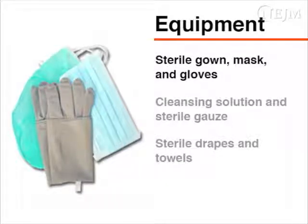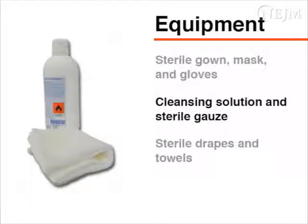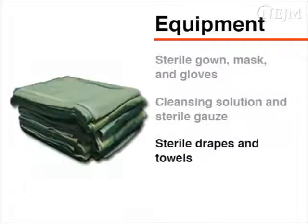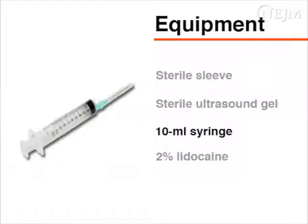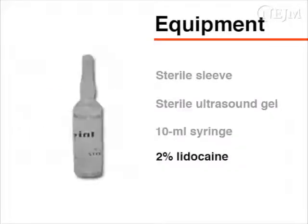To prepare the patient's skin, you will need a cleansing solution such as 2% chlorhexidine and sterile gauze. You will also need sterile drapes and towels, a sterile sleeve to cover the ultrasound probe, and sterile ultrasound gel. To provide local anesthesia, you will need a 10 milliliter syringe filled with 2% lidocaine.